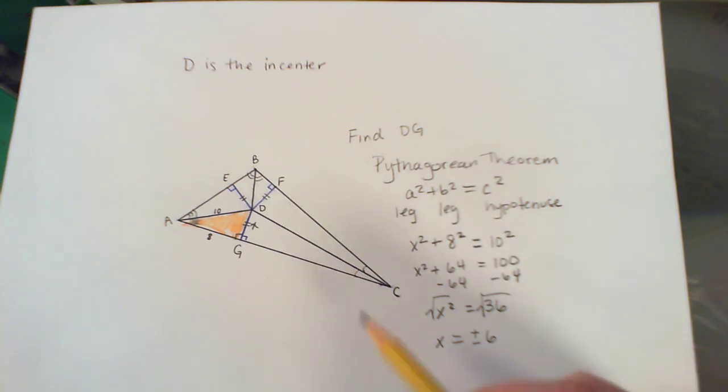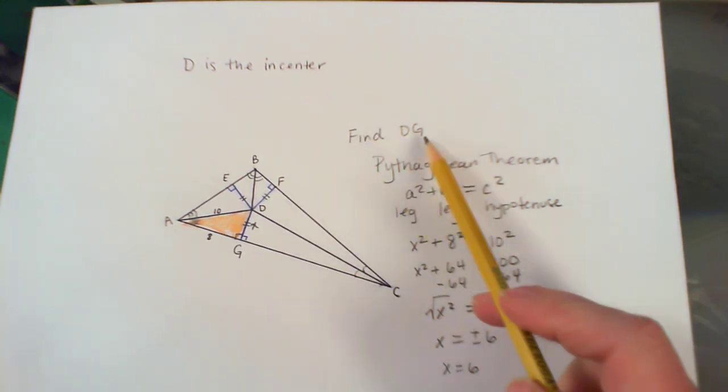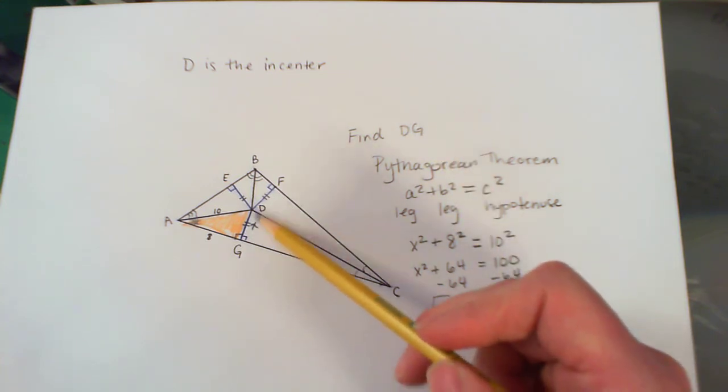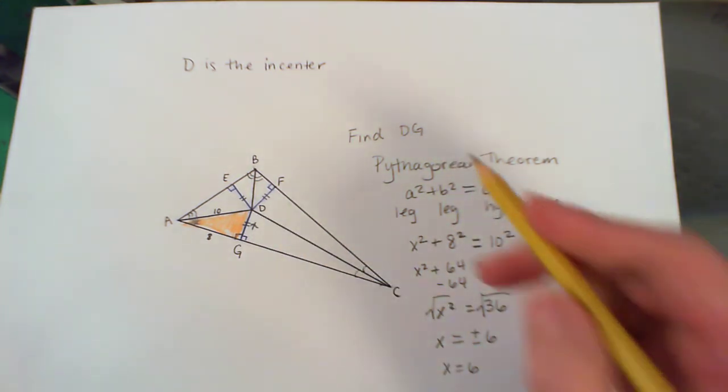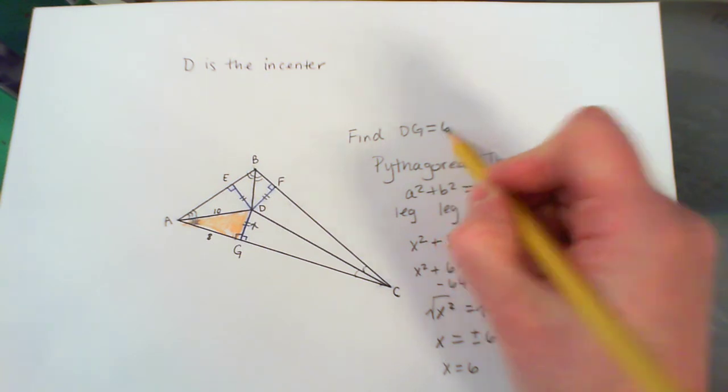It doesn't make any sense to have a negative side length. So X just equals 6. So if I want to find the length of DG, and I use temporarily the letter X for that length, DG is 6.